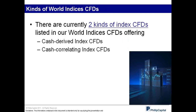What kinds of world indices does our desk provide? There are two kinds: cash-derived index CFDs and cash-correlating index CFDs. For cash-derived CFDs, the only index CFD that is cash-derived is our Straits Times Index $5 CFDs — we are actually quoting prices directly from the STI. If you see the STI at 3,280 today on your trading account, that is the live price we are quoting from on your trading platform.